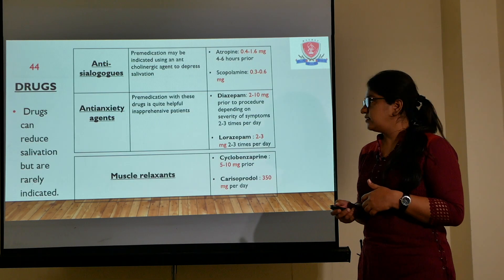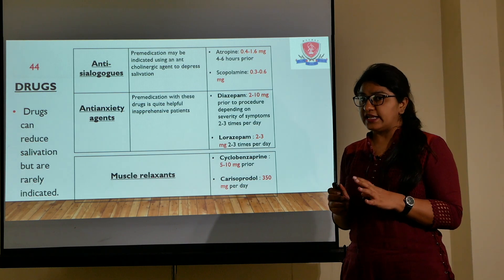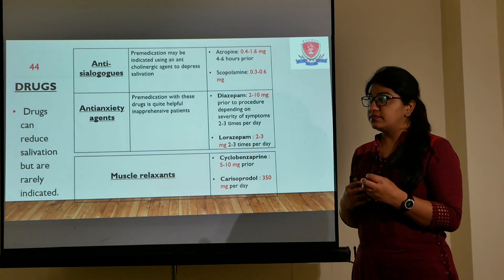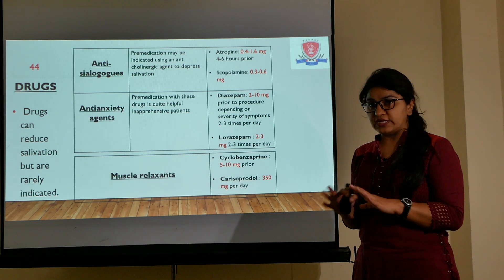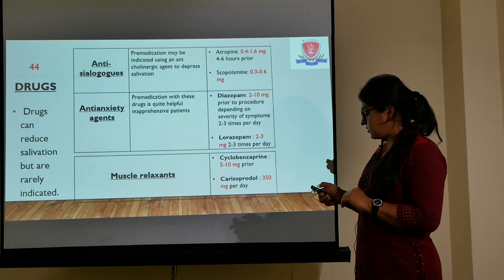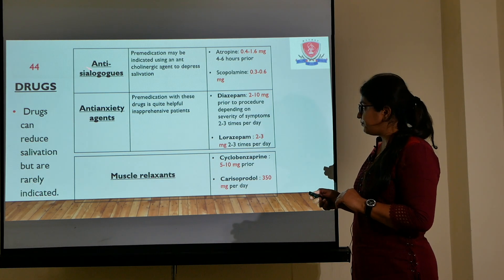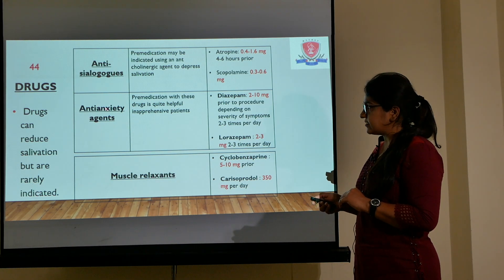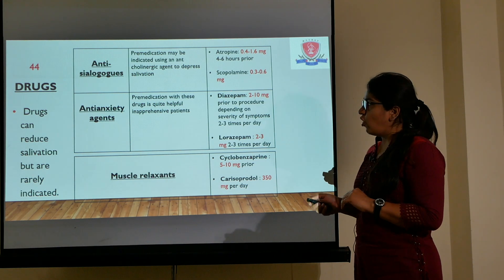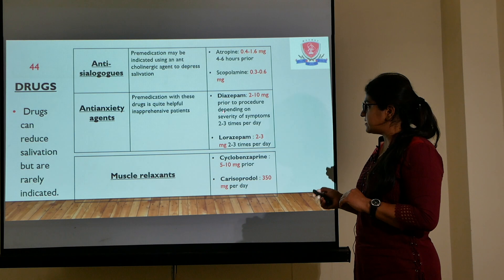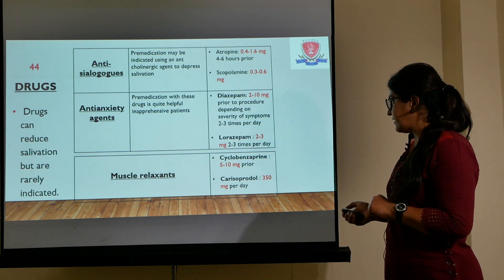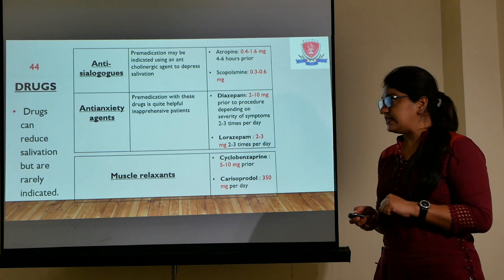Drugs are not routinely used — they are only indicated for patients who are very apprehensive or mentally challenged patients. What drugs are used? Anti-sialogogues or anti-anxiety drugs — reducing salivation using atropine or scopolamine, or for anxiety you can use diazepam, lorazepam, and sometimes even muscle relaxants like cyclobenzaprine or carisoprodol.